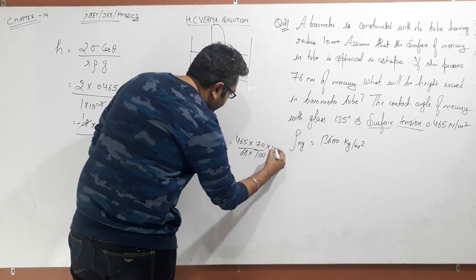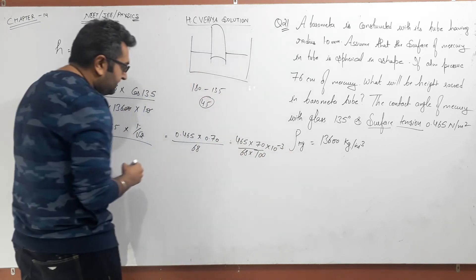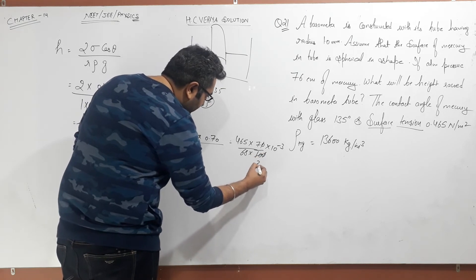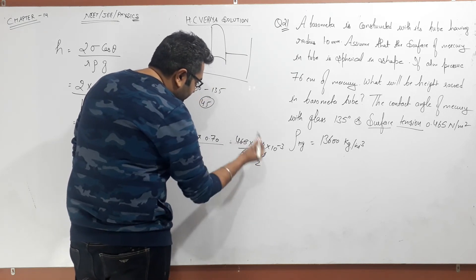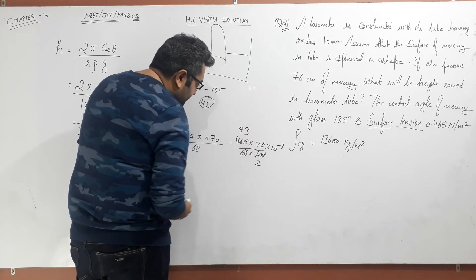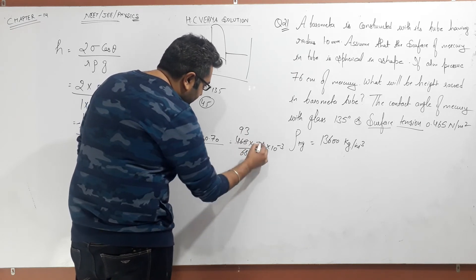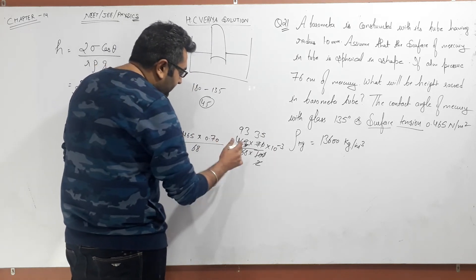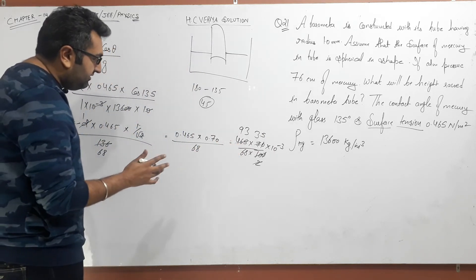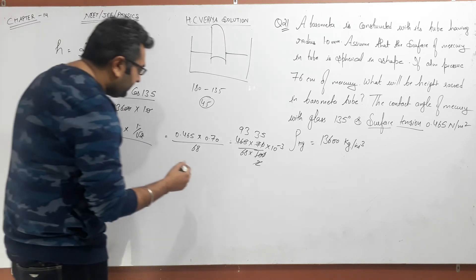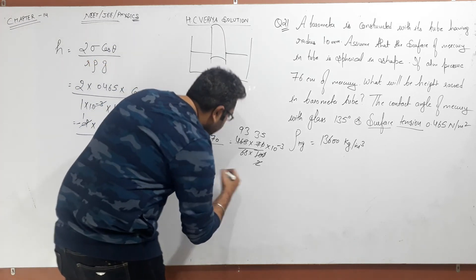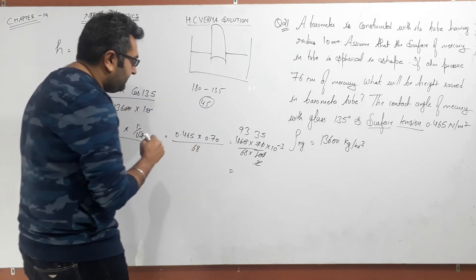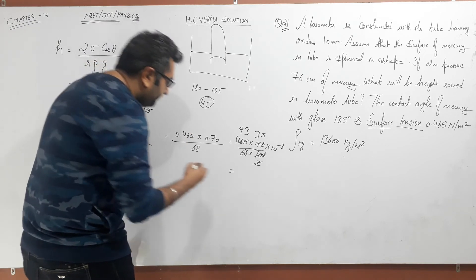Continuing the calculation with 10⁻³ in the denominator, sorting it out: 2 × 5 gives certain values at each step — going to 93, then 3.5, then 68. Multiplying all together, we get the result. Let me calculate this directly — simple multiplication needs to be done. The value comes out to approximately...